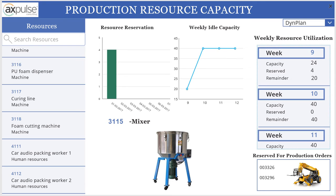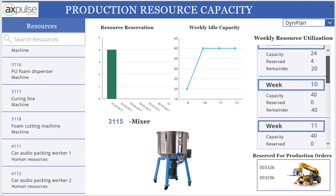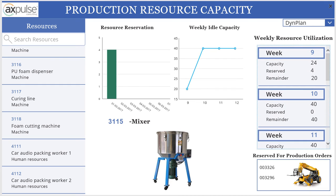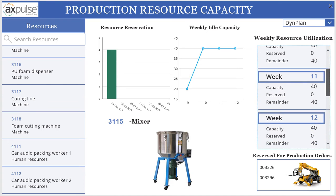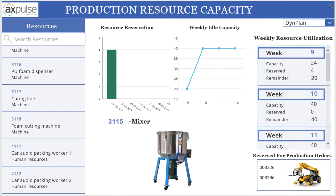On the right-hand side of this app, you can see two lists. This particular list is the weekly resource utilization — right now you can see week 9, week 10, and week 11 and so on. This shows you the resource capacity in total, what has been reserved, and what is the remaining capacity for each particular week. All this data is coming from Microsoft Dynamics AX directly as part of the real-time integration.